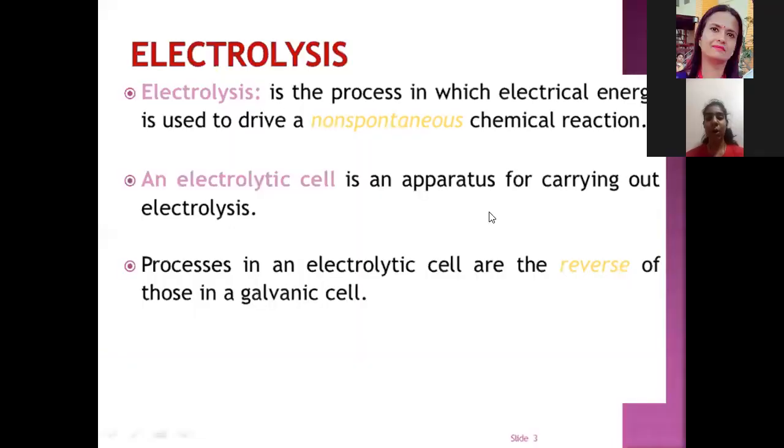A non-spontaneous chemical reaction. Second, an electrolytic cell is an apparatus for carrying out electrolysis. Process and an electrolytic cell are the reverse of those in a galvanic cell.